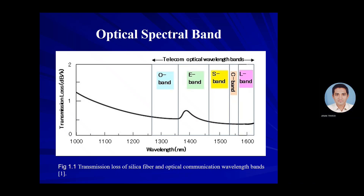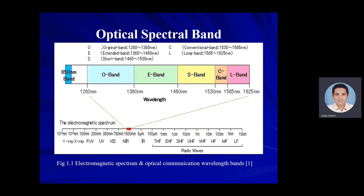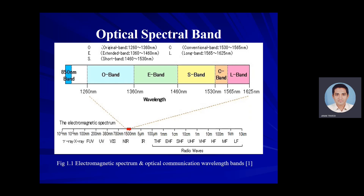It also includes around the 850 nanometer wavelength band, and that is divided into five wavelength bands referred to as O, E, S, C, and L band, additionally the 850 nanometer and U band. This second figure is about optical spectral band that includes the 850 nanometer band, then O band, E band, S band, C band, and L band with their respective ranges.